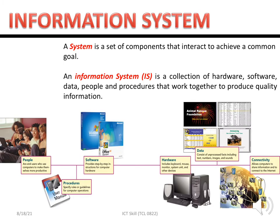Next, we learn what is an information system. A system is a set of components that interact to achieve a common goal. An information system is a collection of hardware, software, data, people, and procedures — five elements that work together to produce quality information. After this we will discuss each element in detail.